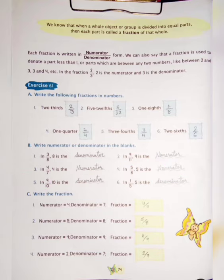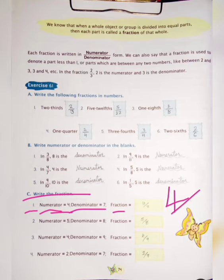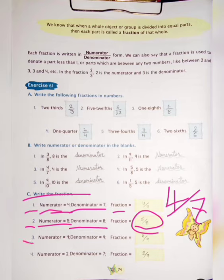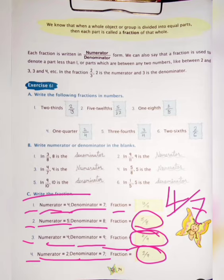Now Question C: Write the fraction. Number 1 — numerator is 4 and denominator is 7, so fraction is 4 upon 7. Next — numerator is 5 and denominator is 8, so fraction is 5 upon 8. Number 3 — numerator is 4 and denominator is 9, so fraction is 4 upon 9. Number 4 — numerator is 2 and denominator is 7, so fraction is 2 upon 7.